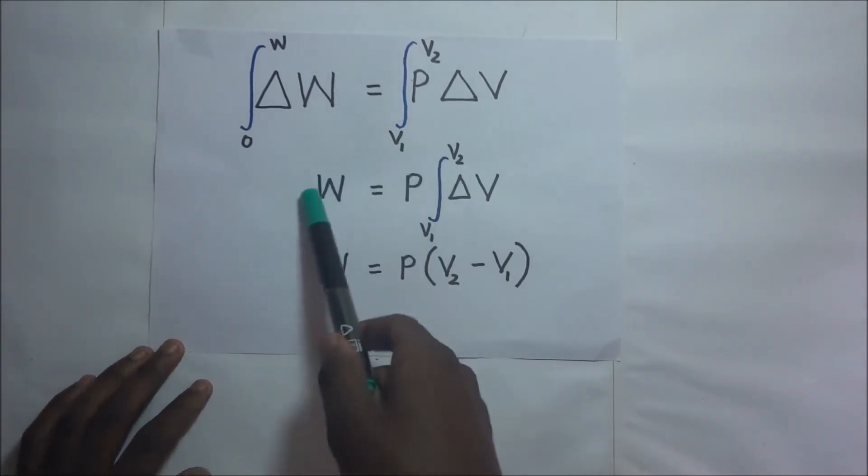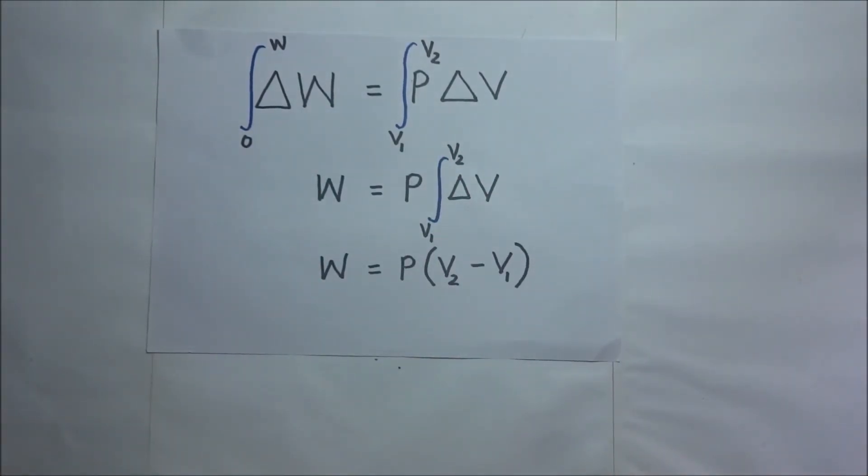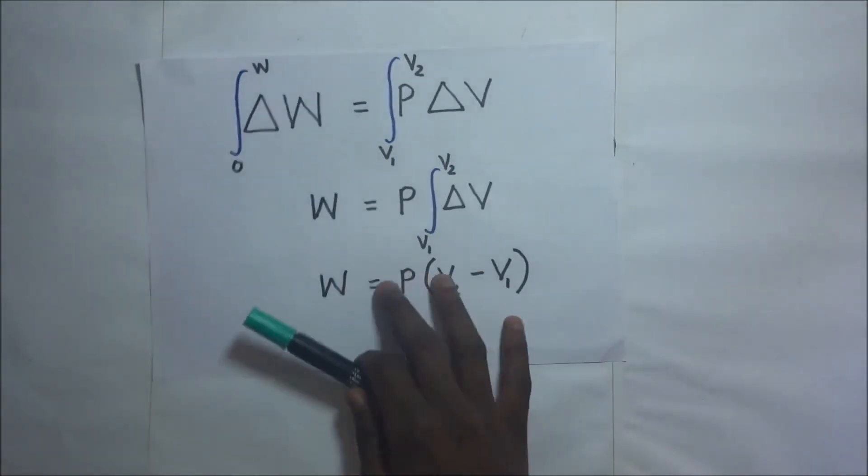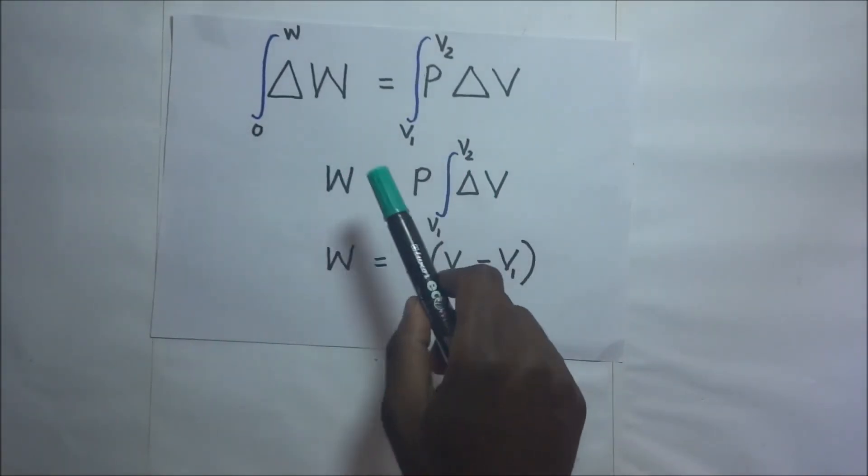The other thing you need to take note of is that this expression for work done applies to reversible processes as well. Like I had earlier said in our previous sessions, a reversible process is one where a process can be taken from the final state to the initial state by retracing the steps that caused it through very small changes. Now if the process is not reversible, it means the values of pressure at any instant will be different, and if they are different it means this won't work.